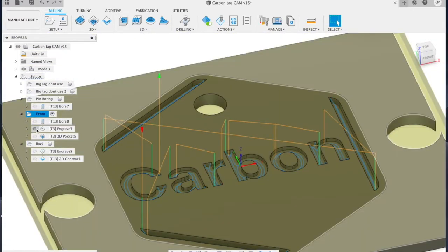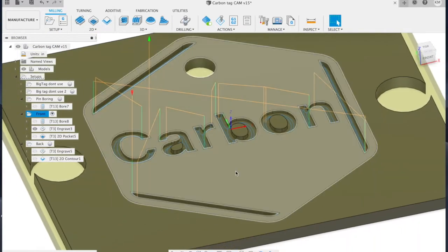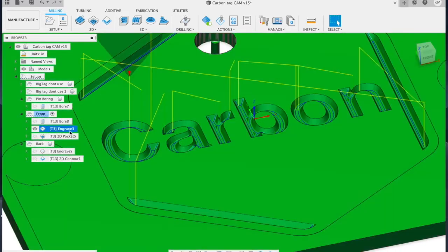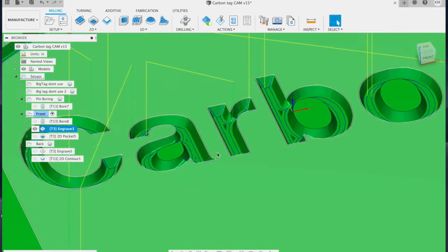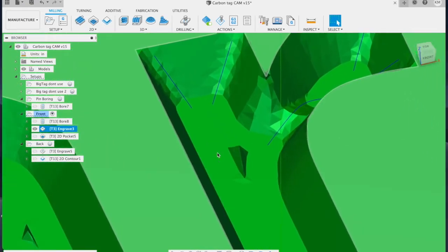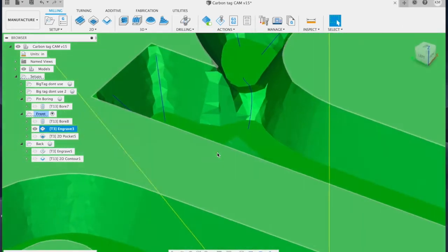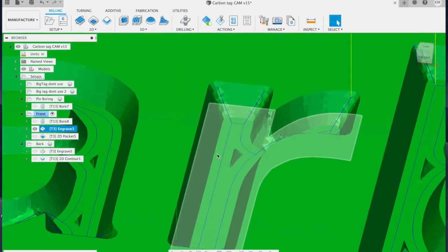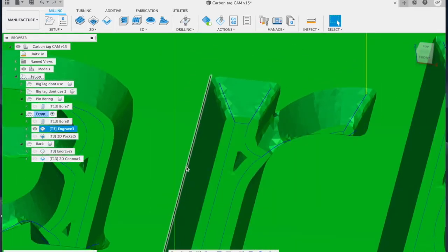There are two operations to cut the front side text, both using a 60 degree V-bit. The first is an engraving toolpath. In Fusion, the engraving toolpath will follow the outline of the selected feature and will raise the tool at the corners to give crisp edges at the surface. This allows you to engrave not just stick lettering, but whatever font you choose.